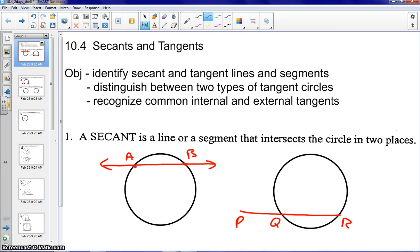Starting off, we're going to talk about a couple definitions, the first of which is a secant. A secant is a line or a segment that intersects the circle in two places. Over here on the left-hand side, we have an example of a secant line, which would be line AB. And over here on the right, we have an example of a secant segment, which would be segment PR. And again, it hits in two places on the circle.